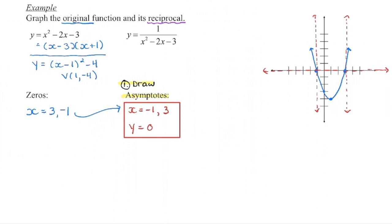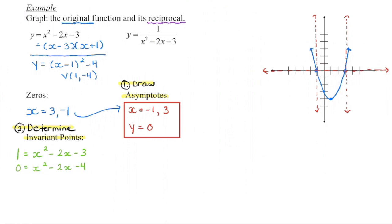The second thing we need to do is figure out where those invariant points lie, and we know that they always occur when y is equal to positive 1 or negative 1. Let's begin with positive 1. I'm going to substitute 1 in the place of y and see what values of x will give us a y value of 1. Because it's a quadratic, I'm going to begin by setting it equal to 0 — subtract 1 from each side — and then see if this is factorable. Are there two numbers that multiply to negative 4 and add to negative 2? There are not, so you could use the quadratic formula or complete the square.